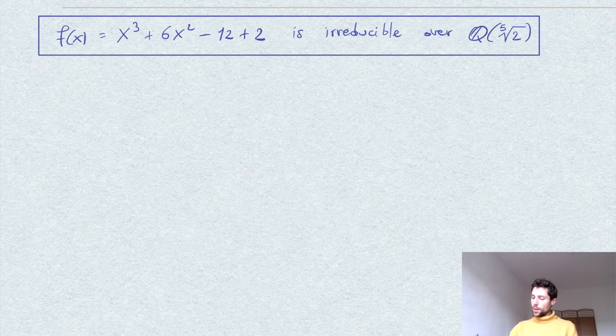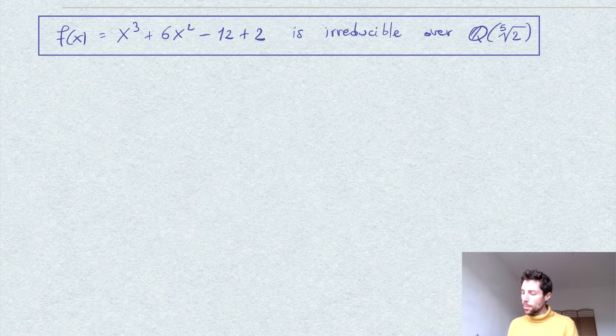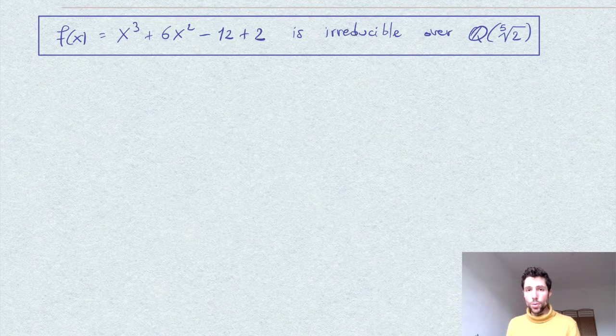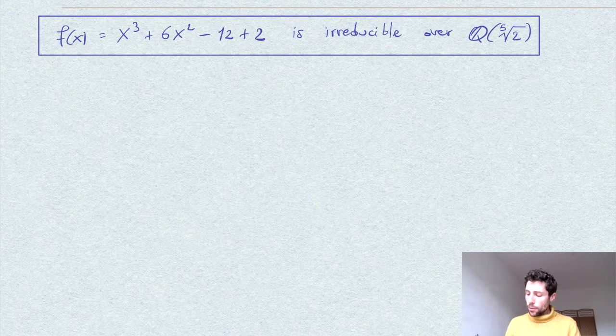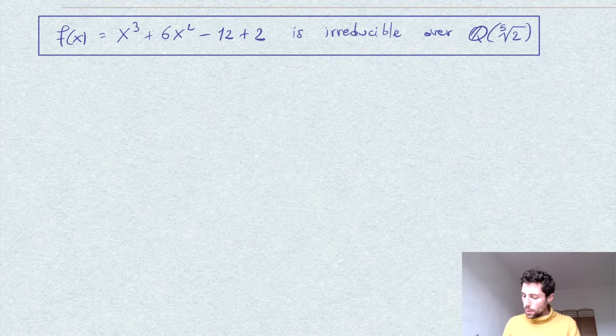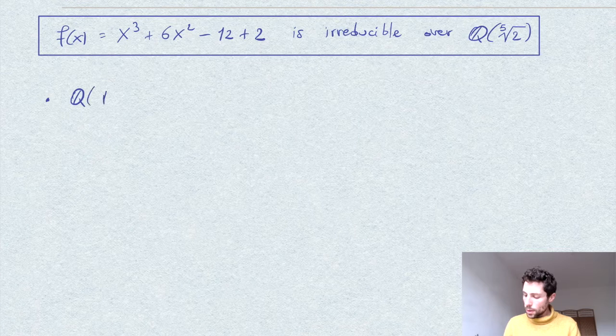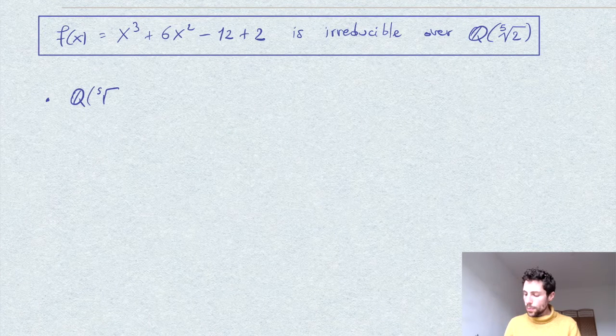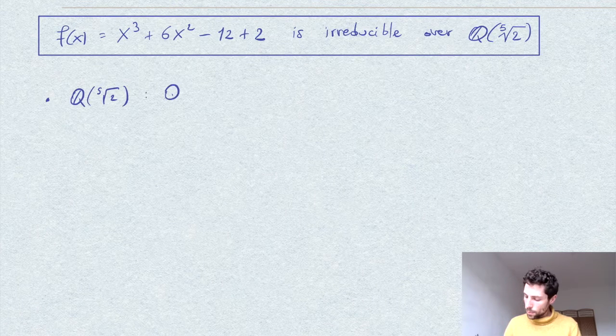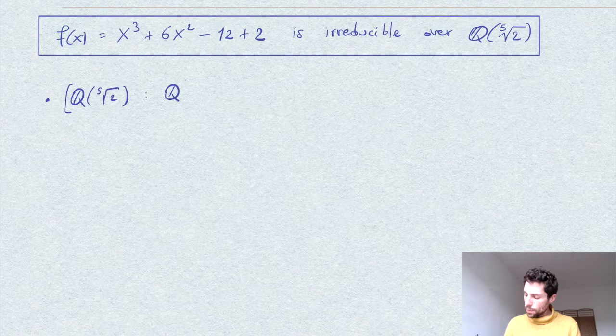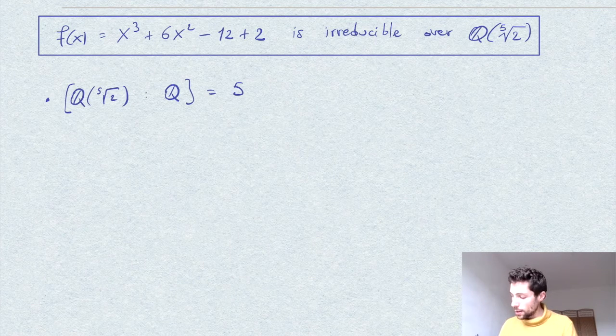Let's show that this polynomial f(x) is irreducible over Q extended by the fifth root of 2. How do we prove such a statement? First we observe that the extension Q by the fifth root of 2 has degree 5 over Q.